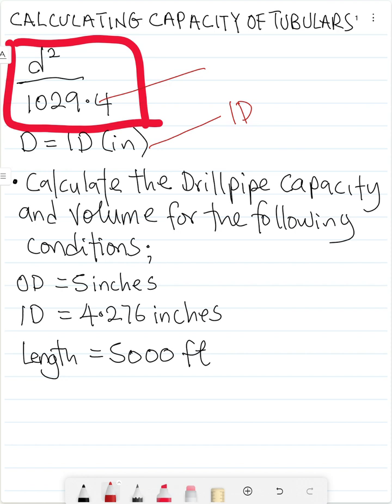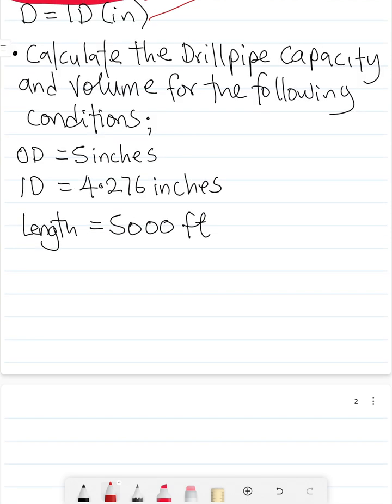So let's look at that quickly using an example. We are told here to calculate the drill pipe capacity and volume for the following conditions: the OD of the pipe is 5 inches, the ID of the pipe is 4.276 while the length is 5000 feet.